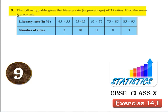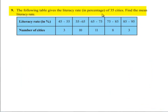The given problem is the following table gives the literacy rate in percentage of 35 cities. Find the mean literacy rate. The literacy rate in percentage they were given as group data and number of cities in the form of frequencies.